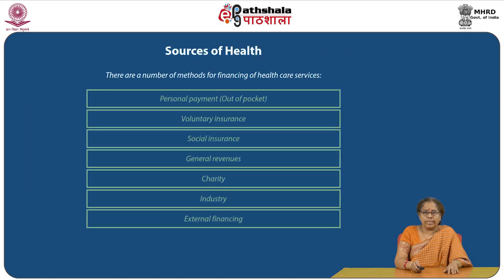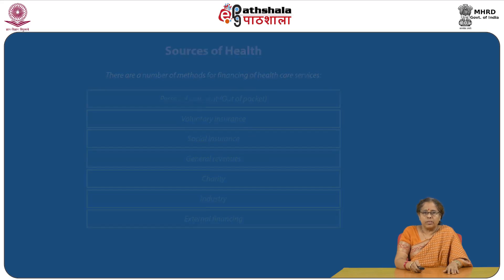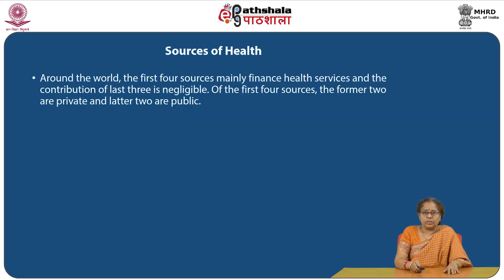The sources of healthcare financing, health outcomes and equity. There are a number of methods for financing healthcare services: one, personal payment or out-of-pocket expenditure; two, voluntary insurance; three, social insurance; four, general revenues; five, charity; six, industry; and seven, external financing. Around the world, the first four sources mainly finance health services and the contribution of the last three is negligible. Of the first four sources, the former two are private and the latter two are public.